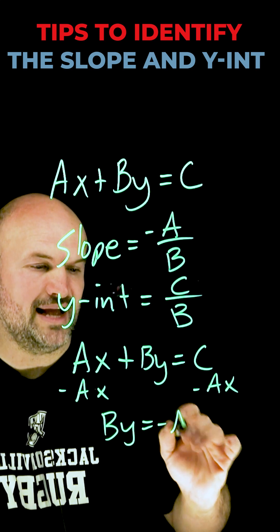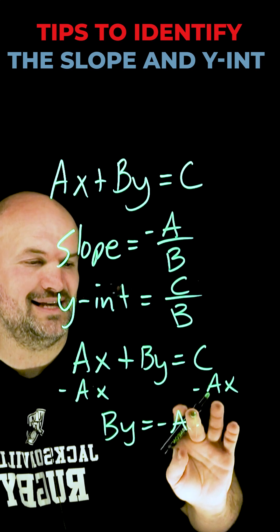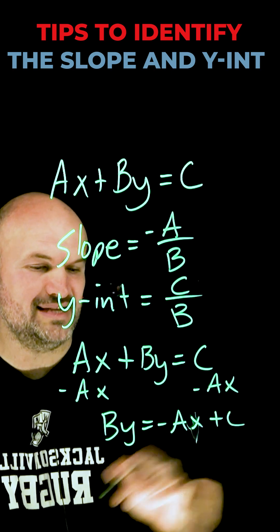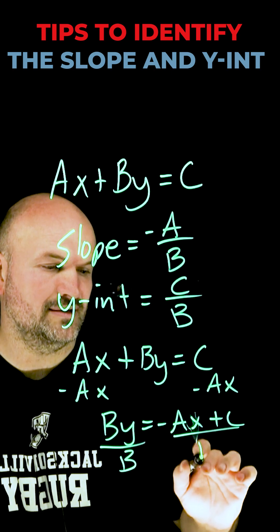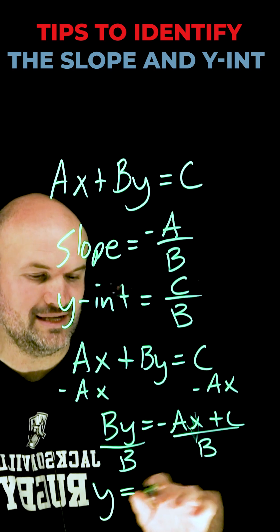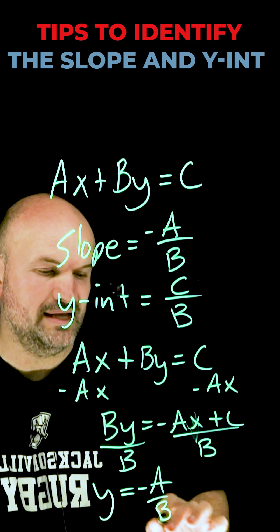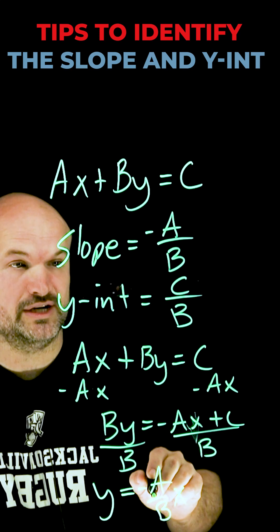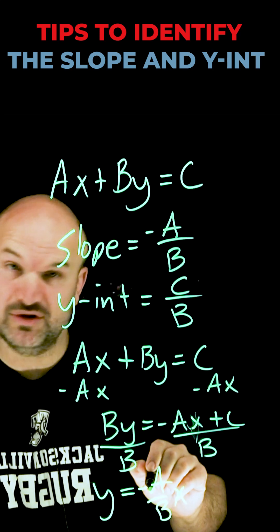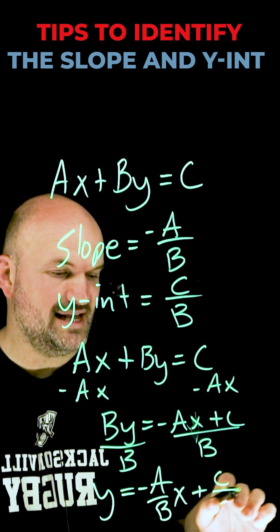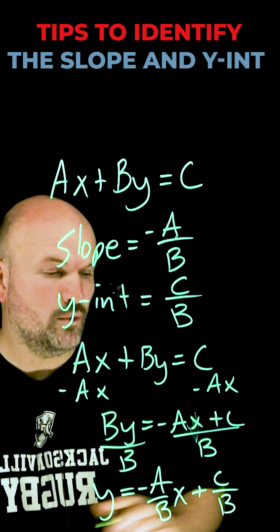By equals negative Ax plus C. We have negative Ax plus C, then divide by B, divide by B, and you see y equals negative A over B times x, which is our coefficient of our linear term, which is like the m, which is our slope, and then plus C over B, which is going to be our y-intercept.